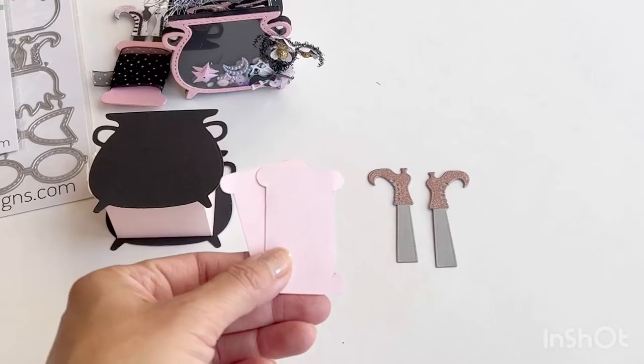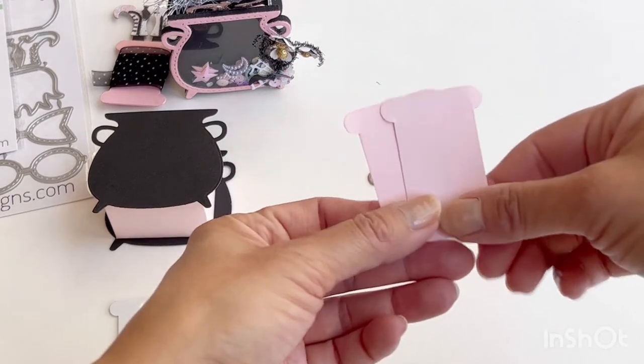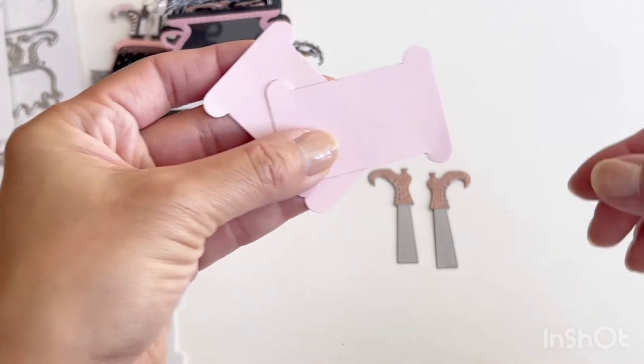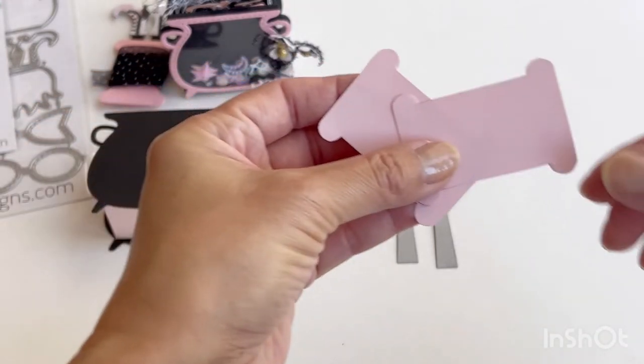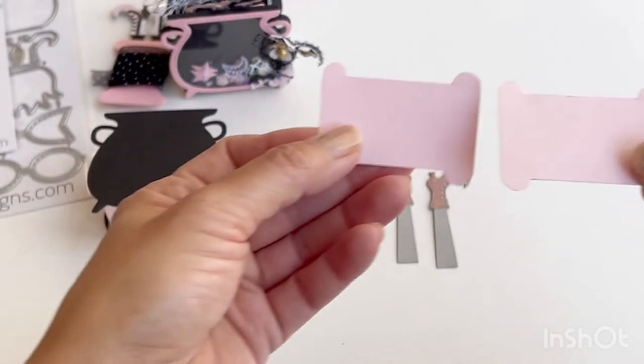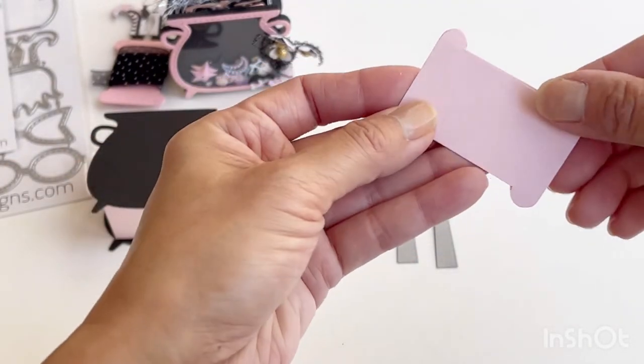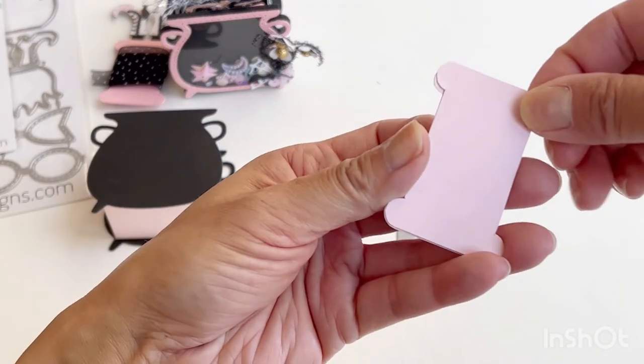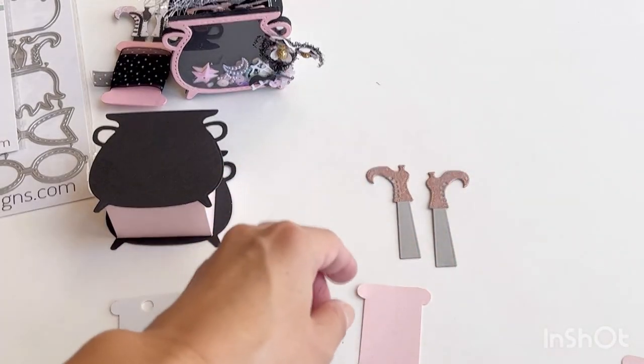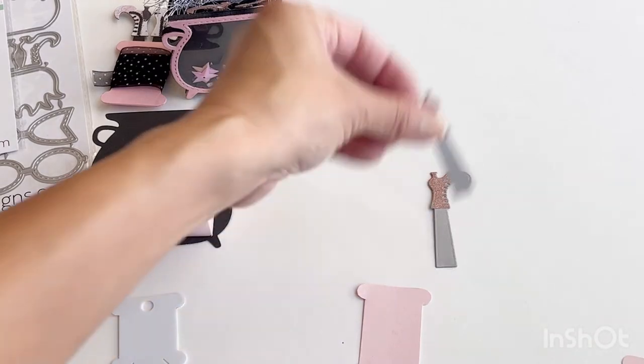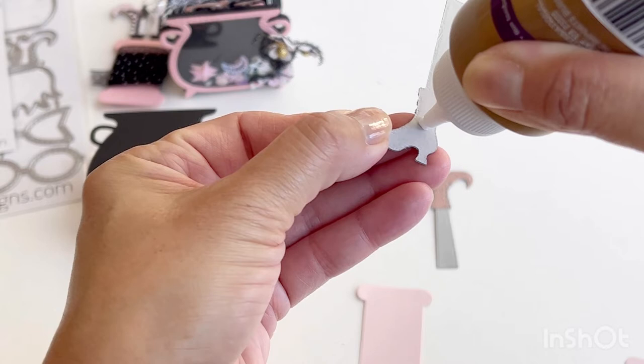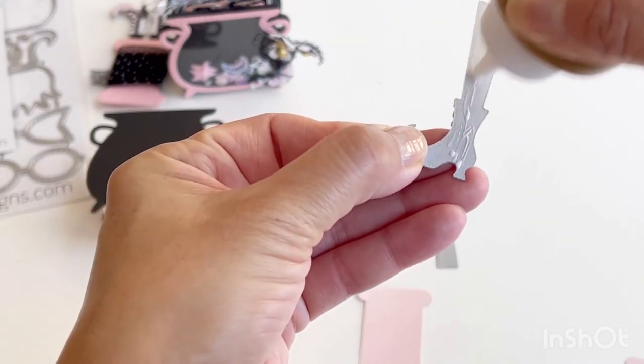I fussy cut and also removed the pencil marks from when I had written my measurements down. You kind of still see faintly my pencil marks there. Now what we'll do is glue these two pieces together and layer on the witches boots. If your bobbin pieces don't exactly match up, which you'll see mine do not, it's not a big deal, we can always trim that off.